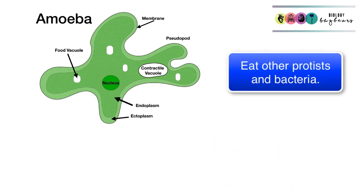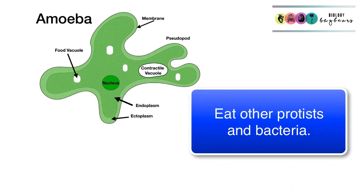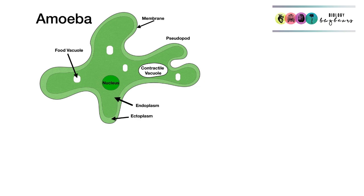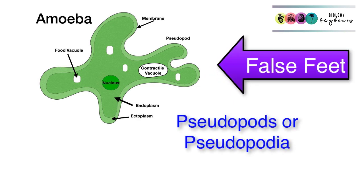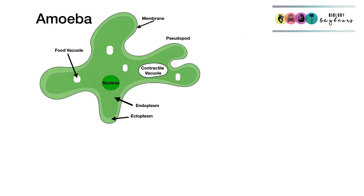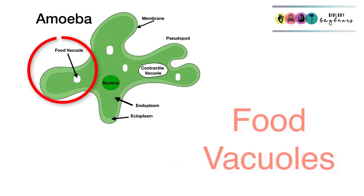Amoeba eat many things, for example other protists like algae and bacteria. They move towards their food by forming cytoplasmic projections called pseudopodia, sometimes called pseudopods and often referred to as false feet. These projections surround the food, and the food gets taken into the amoeba, trapped in a structure called a food vacuole.